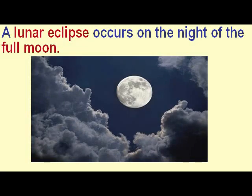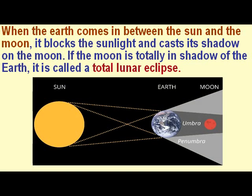A lunar eclipse occurs on the night of the full moon. When the earth comes in between the sun and the moon, it blocks the sunlight and casts its shadow on the moon.